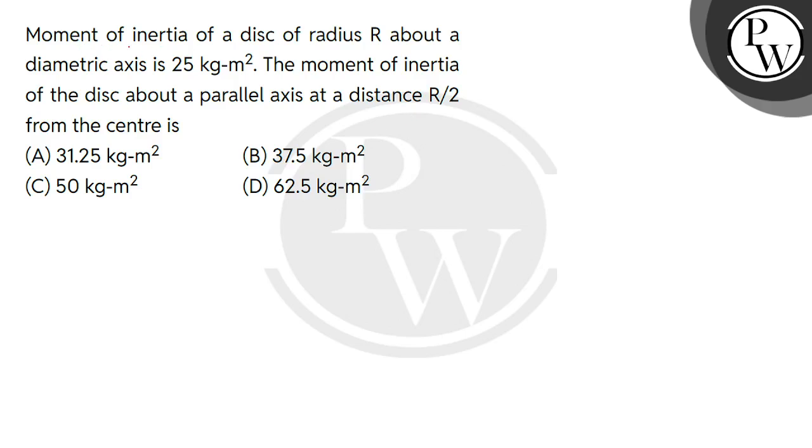Hello guys, let's read the question. Moment of inertia of a disc of radius R about a diametric axis is 25 kg-m². The moment of inertia of the disc about a parallel axis at a distance R/2 from the center is: